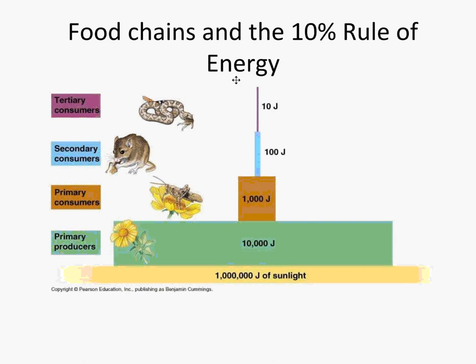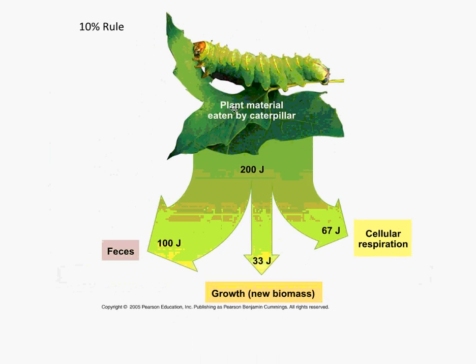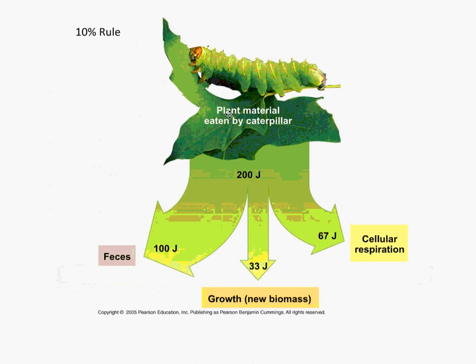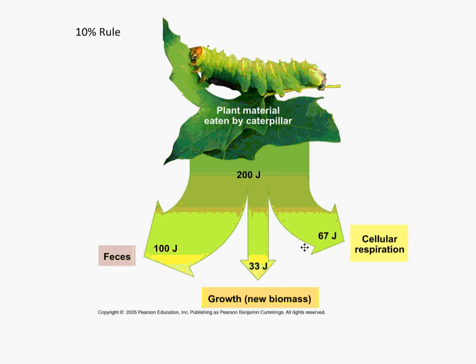This next picture shows the idea of the 10% rule and how joules can be lost. Waste is another big one — feces is a common term. There's also growth, adding new biomass to the organism, and cellular respiration, meaning just general keeping them alive. So not much of that energy from the plant being eaten is going to be available at the next level.